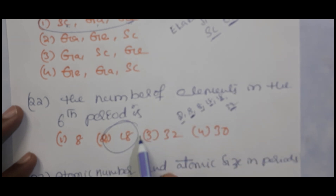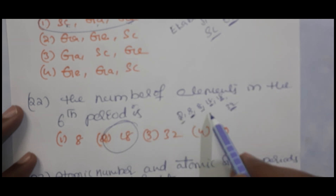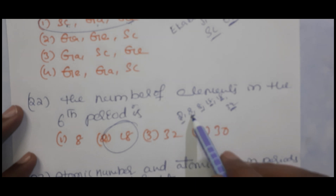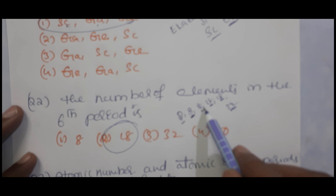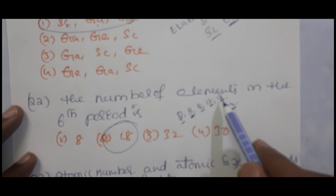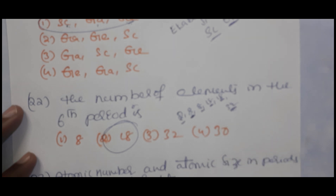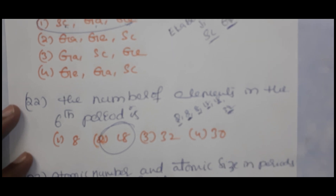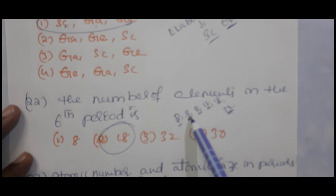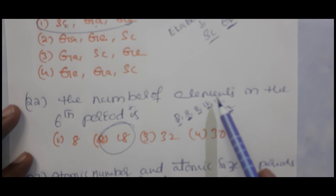Number of elements in the sixth period is 32. You can remember: first period has 2 elements, second 8, third 8, fourth 18, fifth 18, sixth 32. The seventh period is incomplete. But the answer for the sixth period specifically — the question asked about 18 in this context refers to period counts: 2, 8, 8, 18, 18, 32.